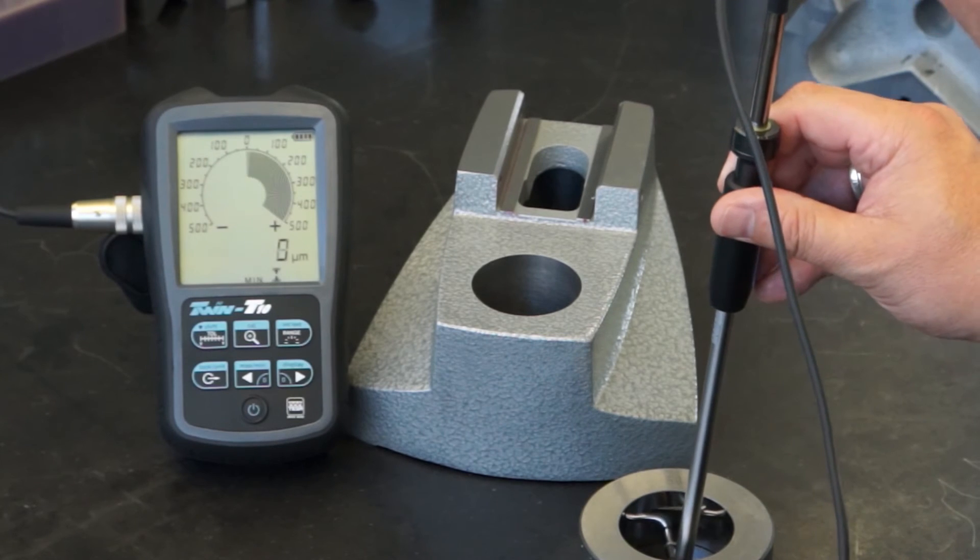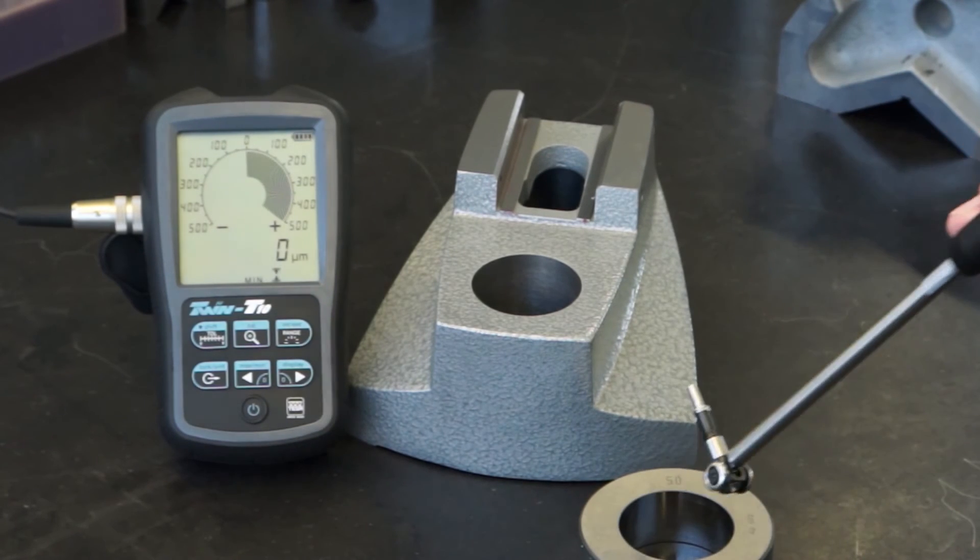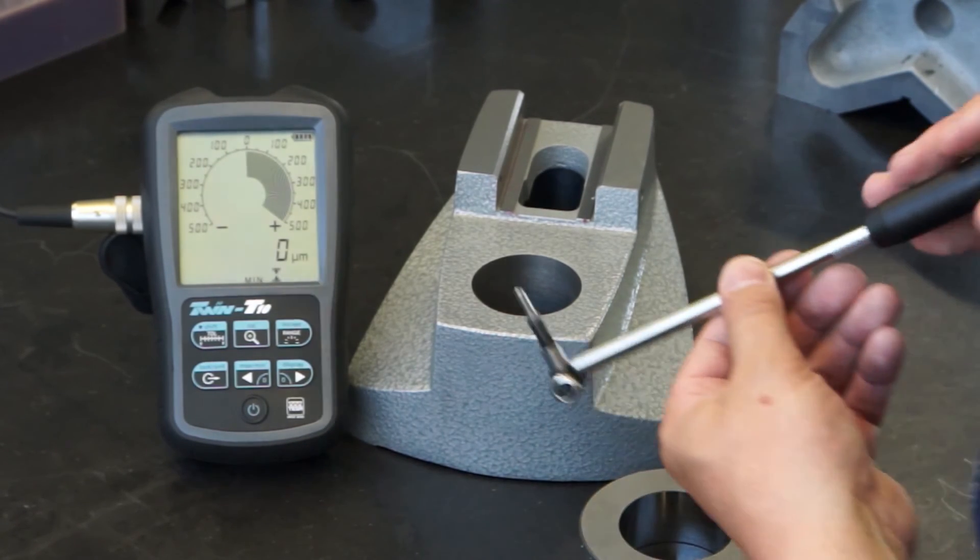The measurement is first done using a setting ring to check that the master value is zero, meaning there is no offset value.